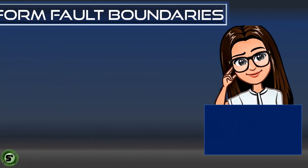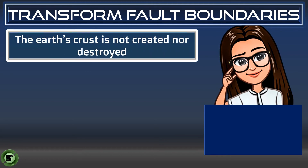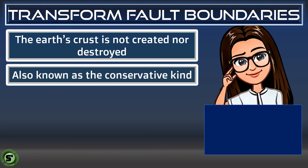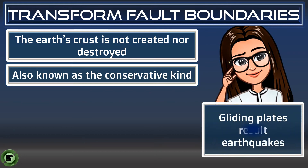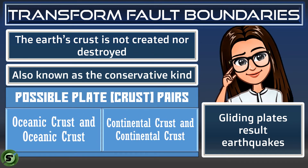The last type of plate boundaries is the transform-fault boundaries. With this type, the two plates slide past or glide against each other. The earth's crust is neither created nor destroyed, so this type is also known as the conservative type. The gliding of plates results in earthquakes. There are two possible kinds: oceanic crust gliding to another oceanic crust, and continental crust gliding to another oceanic crust.